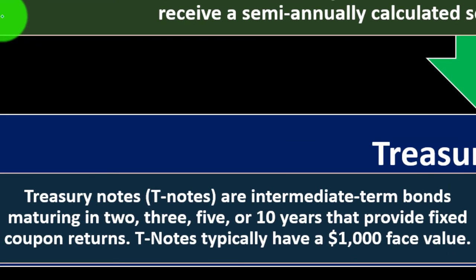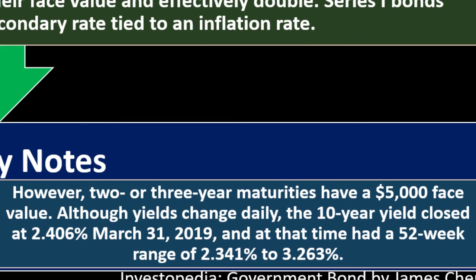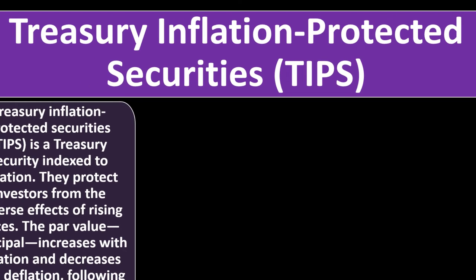Treasury notes, or T-notes, are intermediate-term bonds maturing in two, three, five, or 10 years, providing fixed coupon returns. T-notes typically have a $1,000 face value, though two- or three-year maturities have a $5,000 face value. Although yields change daily, the 10-year yield closed at 2.406% on March 31st, 2019, with a 52-week range of 2.341% to 3.263%.